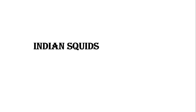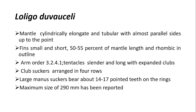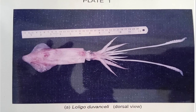In this video, we will see different types of squid varieties present in Indian waters. The first one is Loligo duvauceli — recently the name has changed to Eurotithis photoleva duvauceli. The key characters: the mantle is cylindrically elongate, tubular with almost parallel sides, tapering to a point. Fins are small, short, and 50 to 55 percent of mantle length, rhomboidal in outline. The arm order is 3-2-4-1. Tentacles are slender and long with expanded clubs. The club suckers are arranged in four rows; the larger suckers bear about 14 to 17 pointed teeth on the rings. The maximum size reported is about 290 mm.